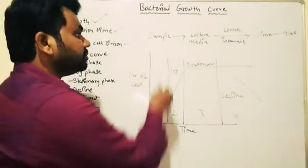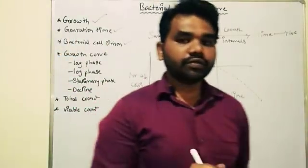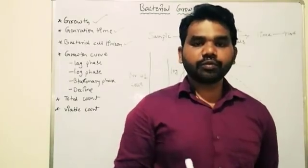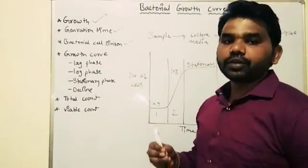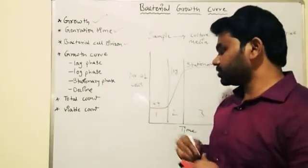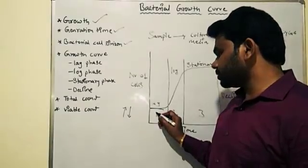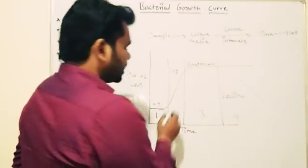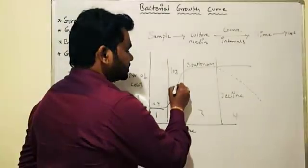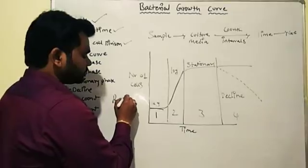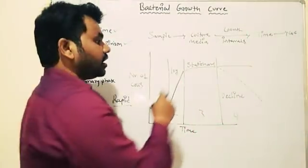In the lag phase, immediately after inoculating the sample into the culture media, the bacteria will not undergo any multiplication. The bacteria will take some time to adapt to the environment. During this lag phase, the bacteria collect all the nutrients and metabolic requirements needed for multiplication. There will be no increase or decrease in cell counts. In the log phase, cell division starts and a straight line indicates rapid growth of bacteria.